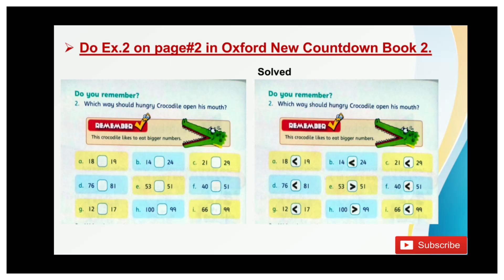In part G, 12 is smaller than 70, now put the smaller sign. In part H, 100 is greater than 99, now put the greater sign. In part I, 66 is smaller than 99, now put the smaller sign.